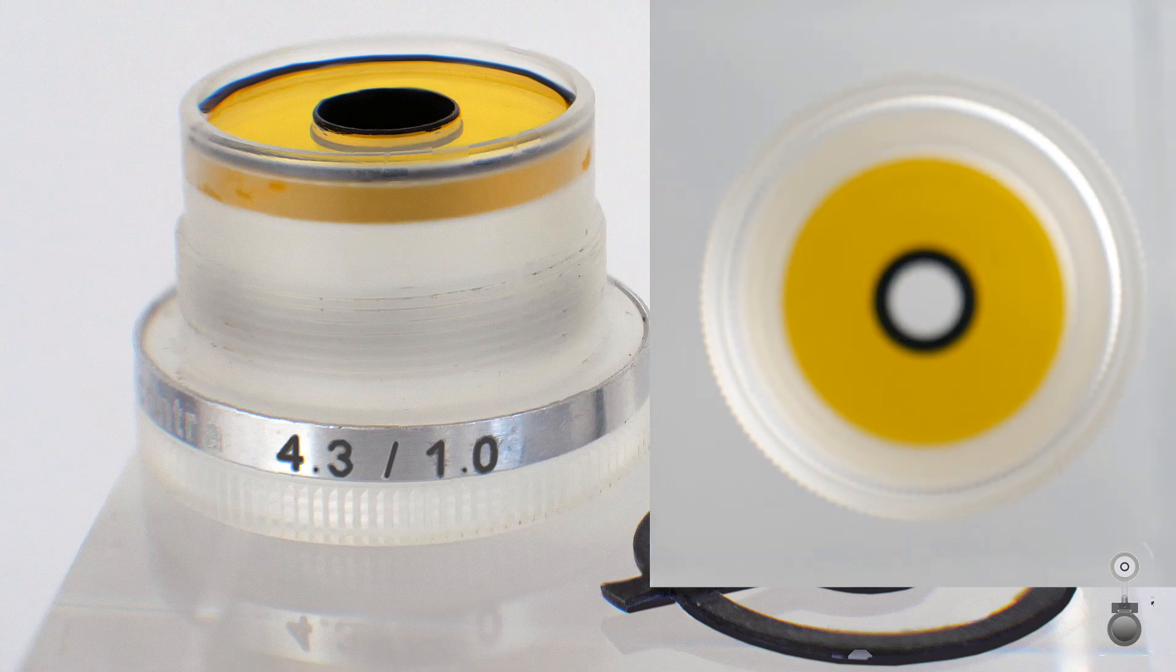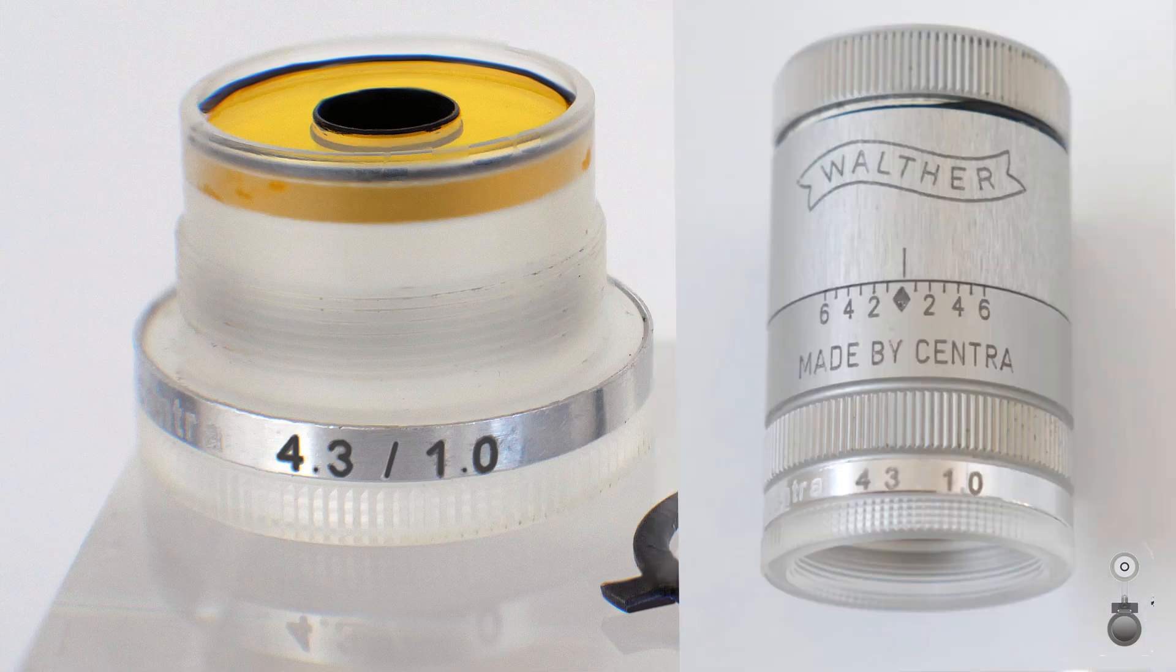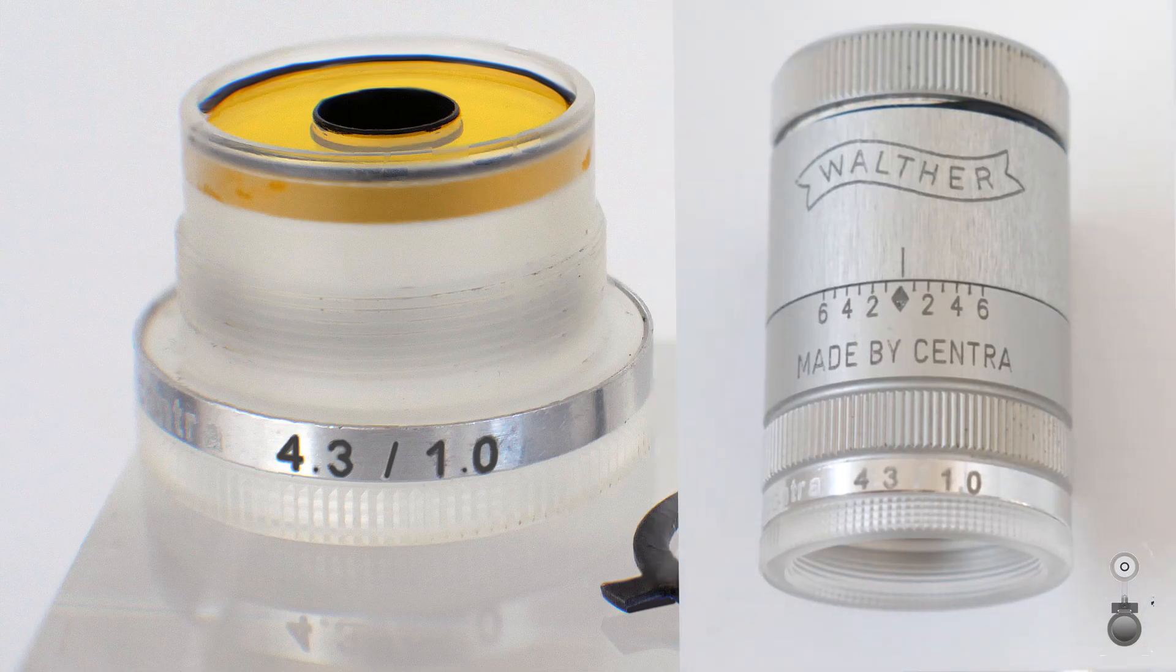On the front sight we find the size of the ring, 4.3 millimeters in this case, and the thickness of the ring here, 1.2. This can be seen during shooting with one view to the tunnel.